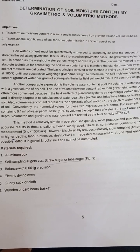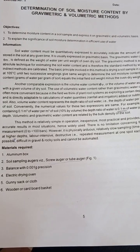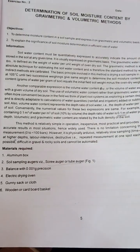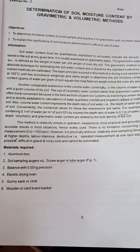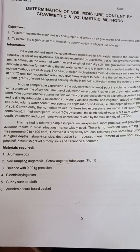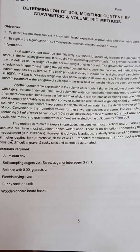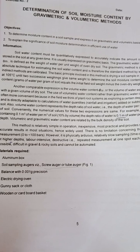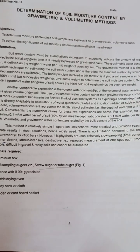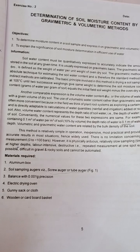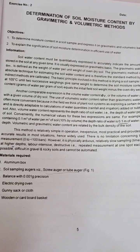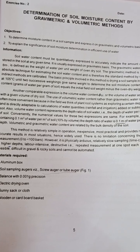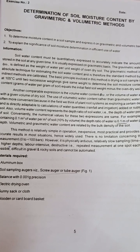However, the methods are physically adverse, relatively slow, require sampling time to time, are time-consuming at higher depths, labor-intensive, and destructive. These are the positives and negatives of gravimetric and volumetric methods. Repeated measurement at one spot each time is not possible. It is difficult in gravel and rocky type soils, and cannot be automated in gravel and rocky type soils.